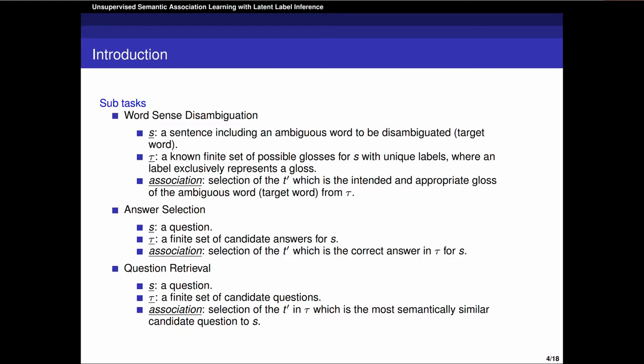We focus on three subtasks in Semantic Association Learning. Word Sense Disambiguation is given a sentence including an ambiguous word to be disambiguated and a set of possible glosses. Our aim is to learn the association between the ambiguous word and its real gloss in the sentence. Answer Selection is given a question and a set of candidate answers. We want to learn the association between the question and its proper answer. Question Retrieval is given a question and a set of candidate questions. Our aim is to learn the association between the given question and the candidate questions which are semantically similar with it.